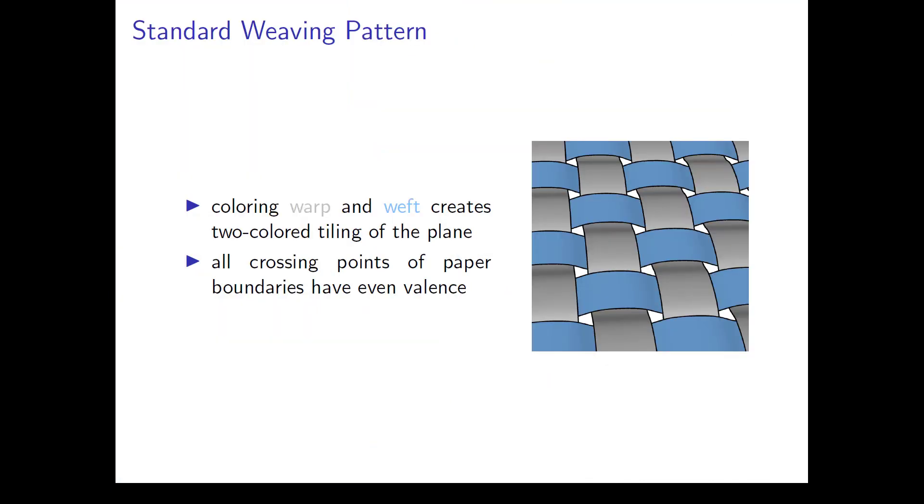The easiest way of weaving paper is cutting two sheets of paper into parallel strips, use one sheet as warp and the other as weft in perpendicular direction. Weft strips are woven alternatingly above and below the warp strips. With two different colors for warp and weft, this creates a checkerboard pattern.